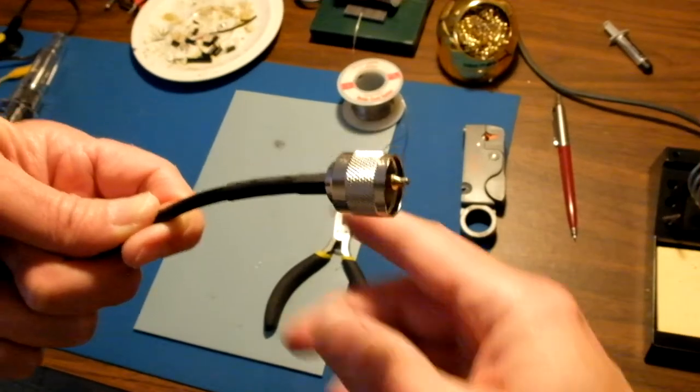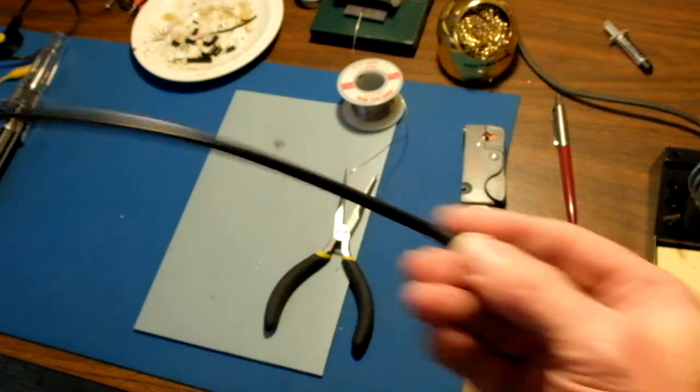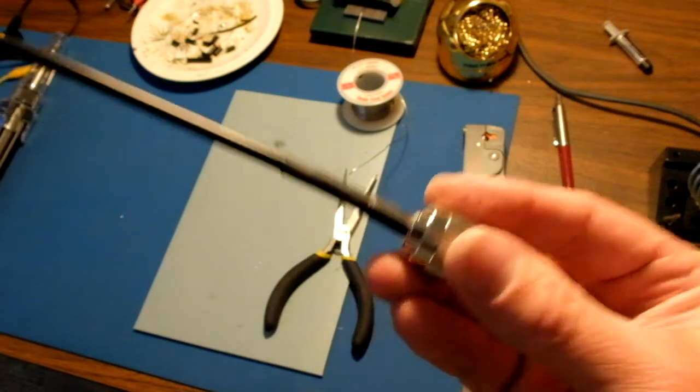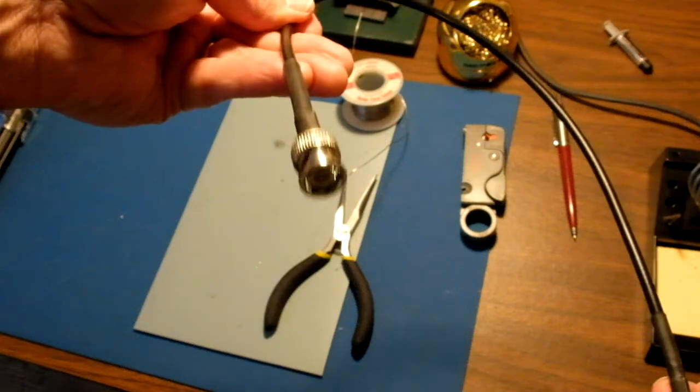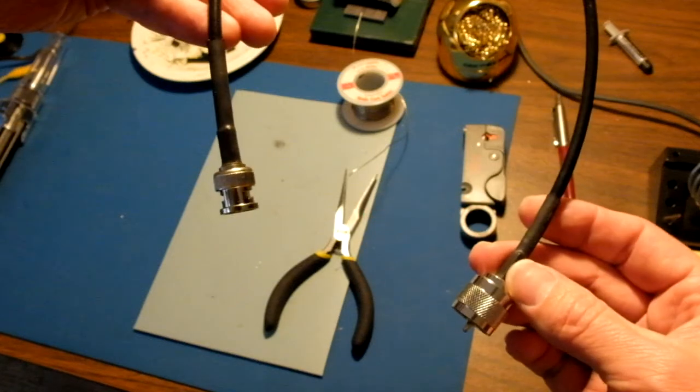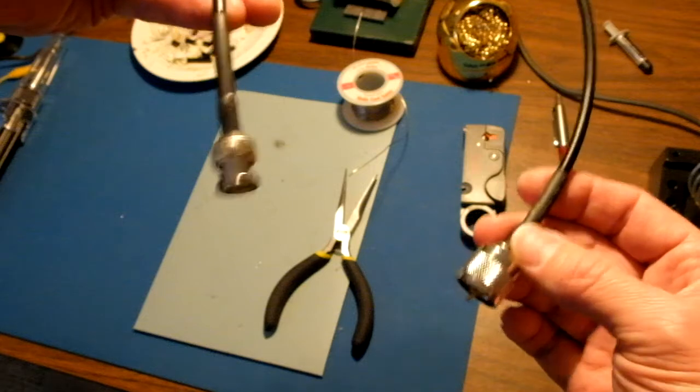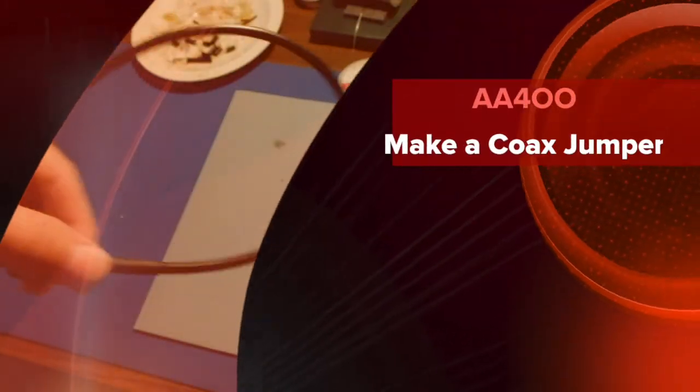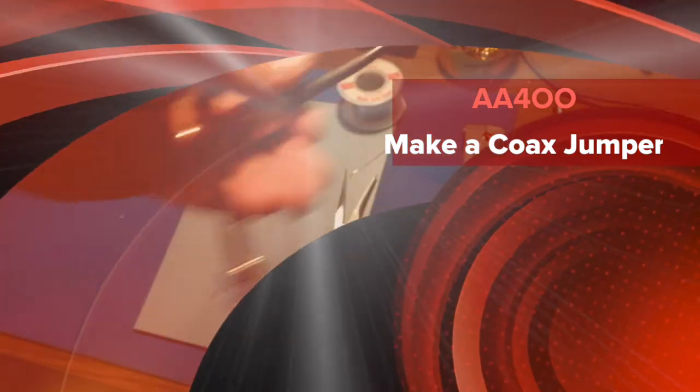Okay, and when we're done, the finished result with the heat shrink attached, I've now made a jumper that goes from BNC to PL259, so I don't have to use a bunch of adapters to connect. I've made two of these, and I don't have to use adapters now to connect to my Elecraft wattmeter to my antenna switches.